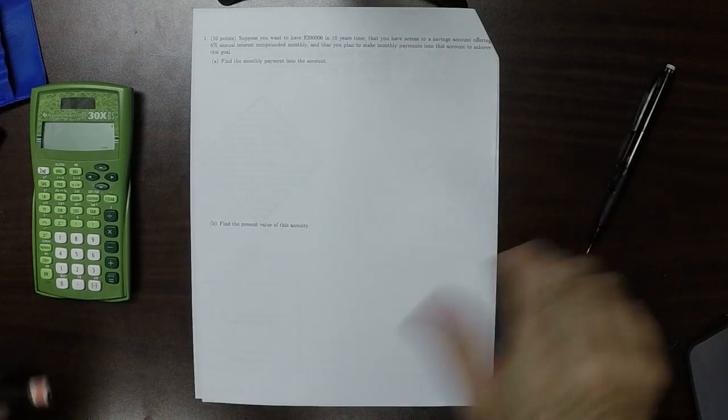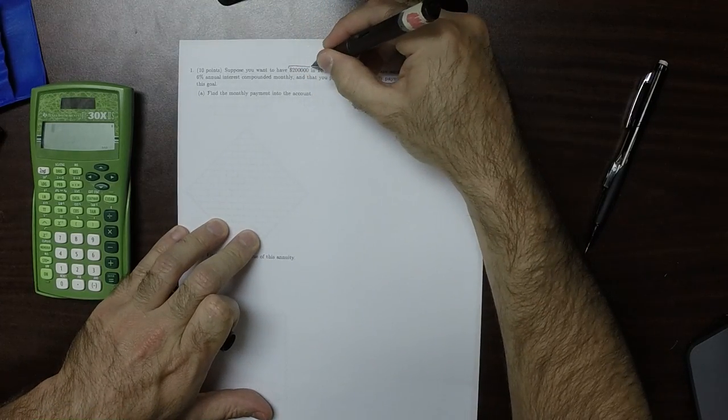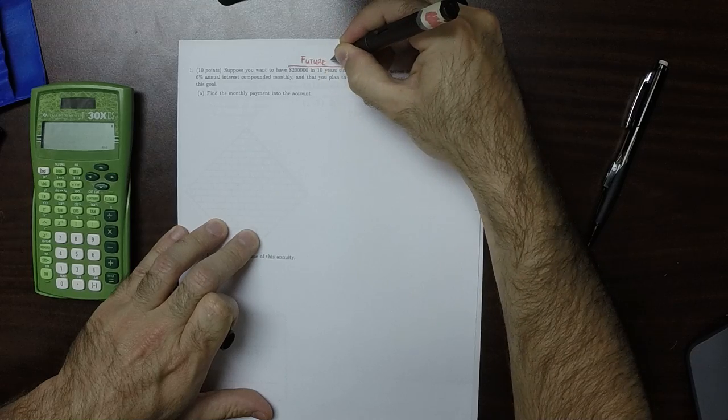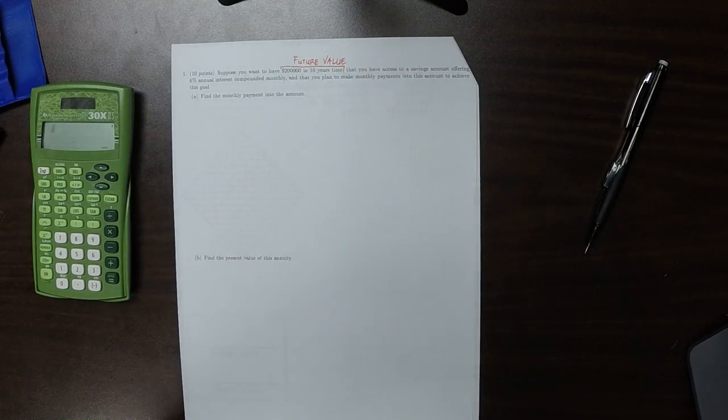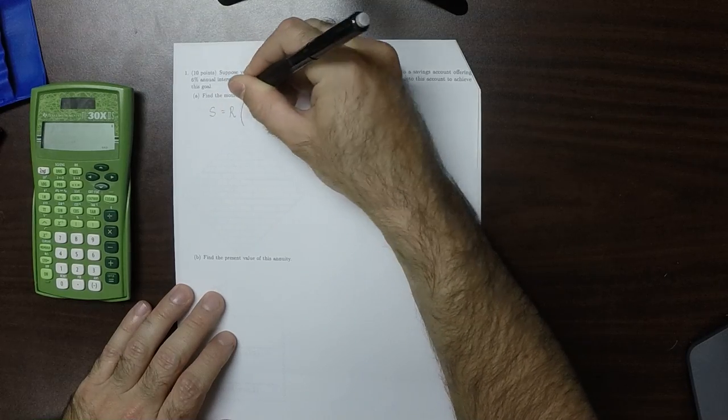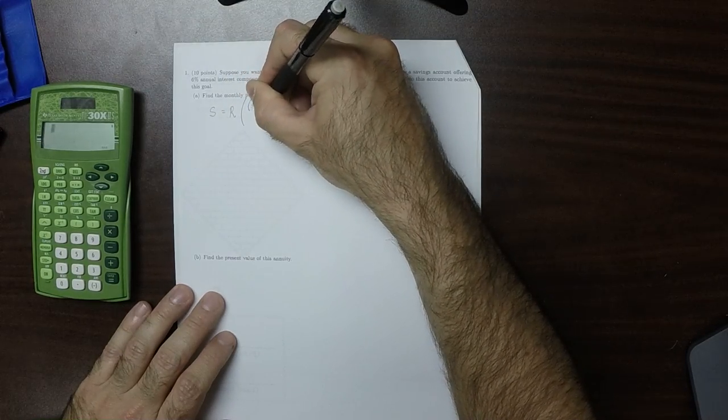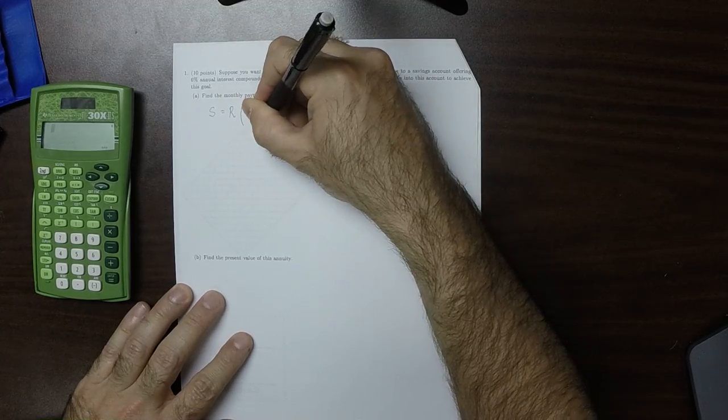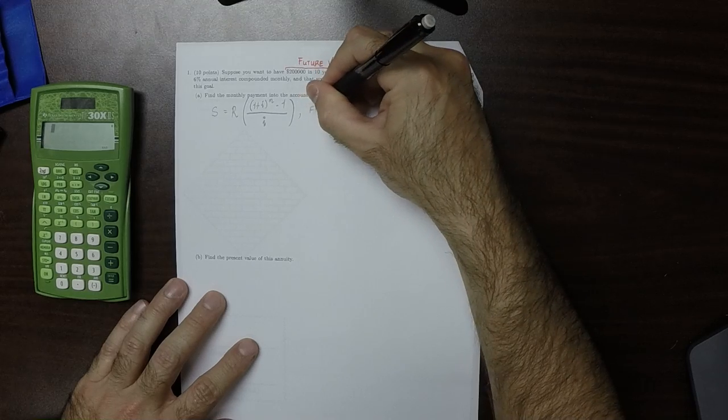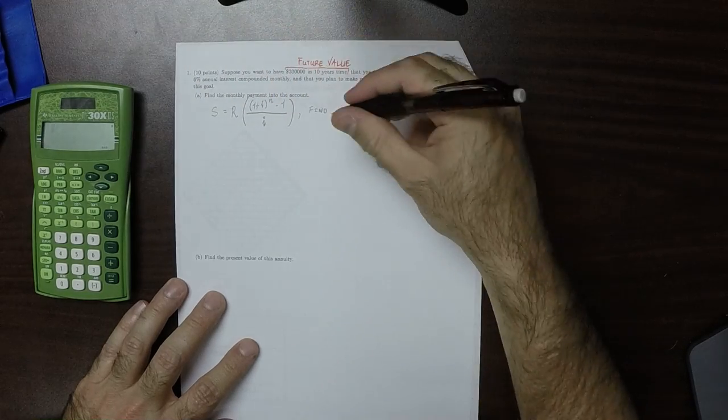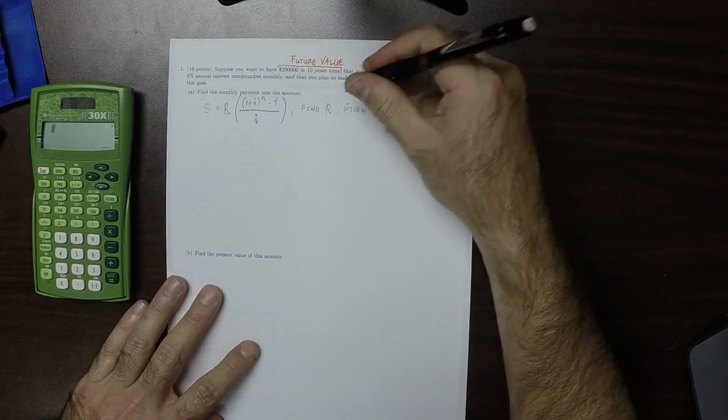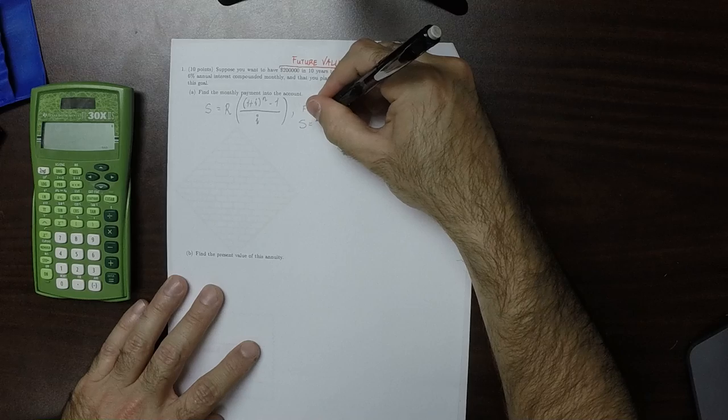So the fact that it says in 10 years time, that means that this is a future value. So that means that we'll be using the formula S is R multiplied by 1 plus i to n minus 1 over i. And we are supposed to find R, because that's what it says, find the monthly payment. So find R.